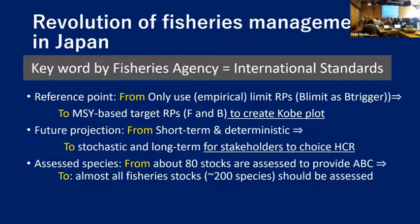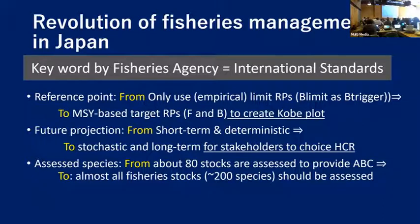As for the assessed species, currently we assess about 80 stocks to provide ABC. But they asked us to assess almost all fisheries stocks — about 200 species, not stocks, but 200 species. So it's a very difficult task.